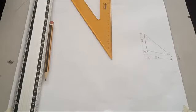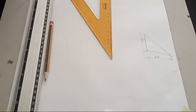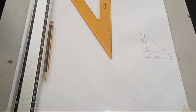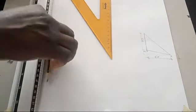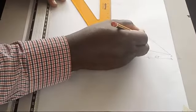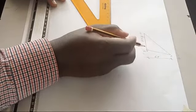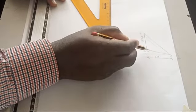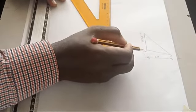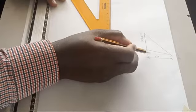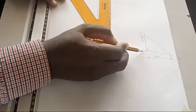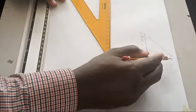Welcome to my channel. Today we'll be solving a question on surface development of an oblique cone. We have a cone of diameter 64, inclined as shown. The distance between the base and the vertex is 8mm, and the height of the cone is 68mm.